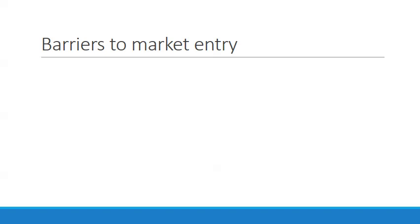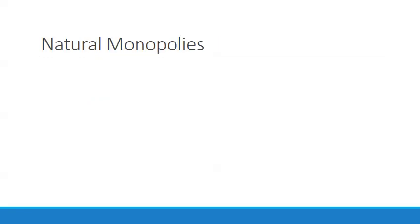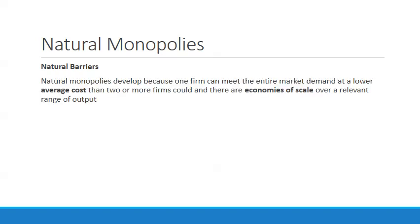The single biggest part of a monopoly market is the barriers to market entry. Monopolies develop as a result of three types of barriers: natural barriers, legal restrictions, and ownership monopolies. Natural monopolies develop because one firm can meet the entire market demand at a lower average cost than two or more firms could, with economies of scale over a relevant range of output.